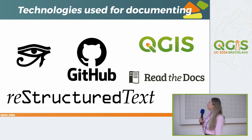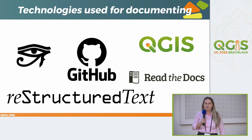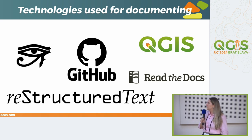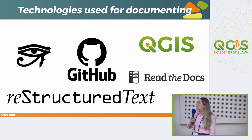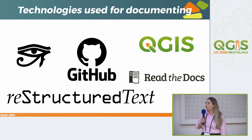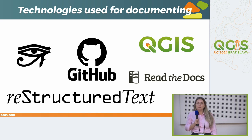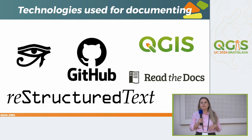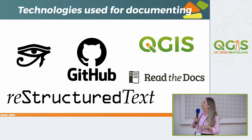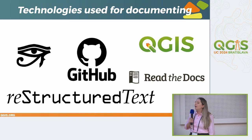The technologies we use for documentation: GitHub is the main platform for our work, and we use Git as version control. Documentation is built by Sphinx, so every document is written in reStructuredText, and we use Sphinx and Read the Docs to publish those changes. And of course, QGIS itself for testing everything.